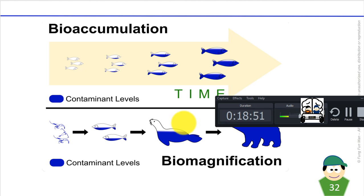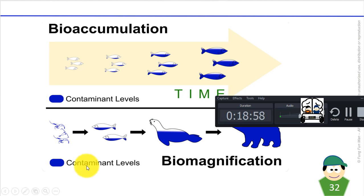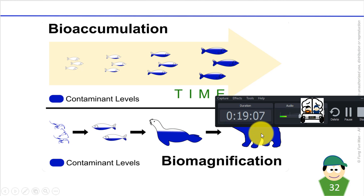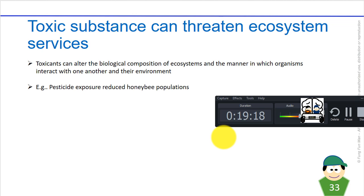Polar bear cubs suffer very bad immune suppression, hormone disruption, and high mortality as a result. The cubs receive PCBs from the mother's milk, so contamination persists and accumulates across generations — which is very tragic.